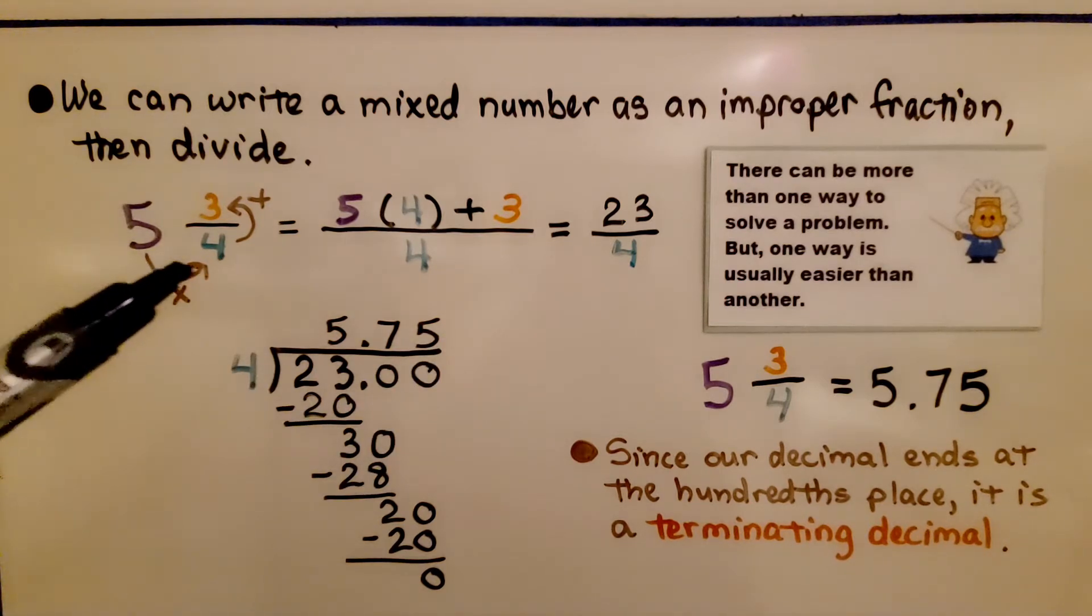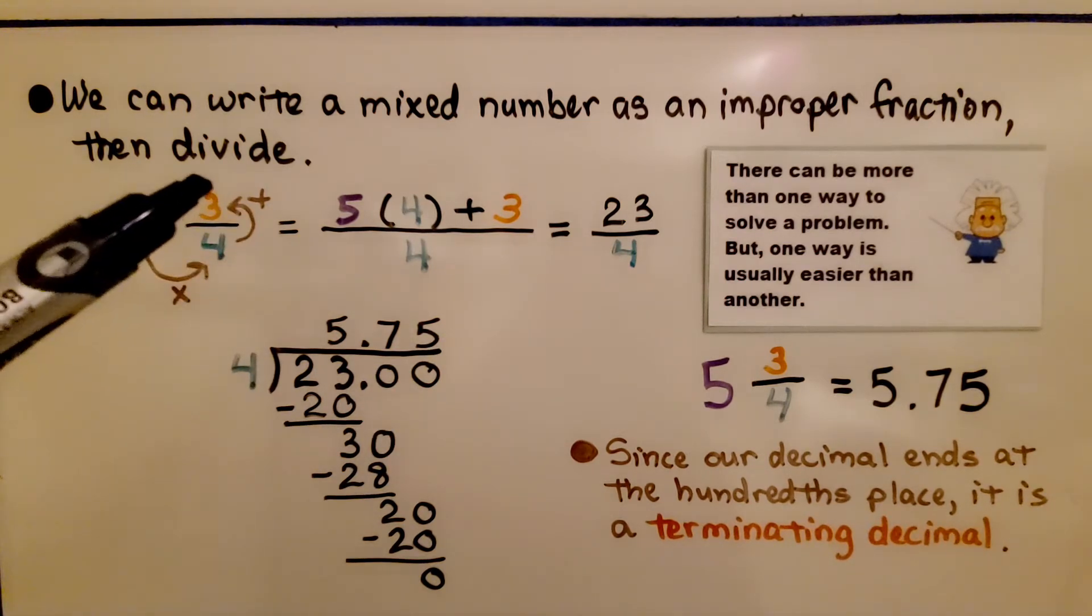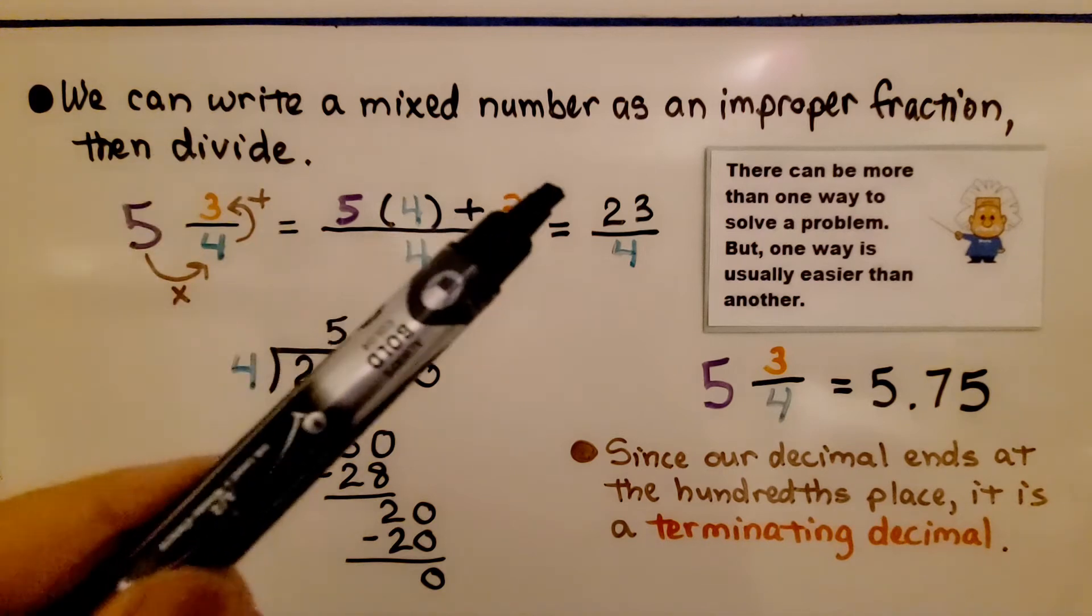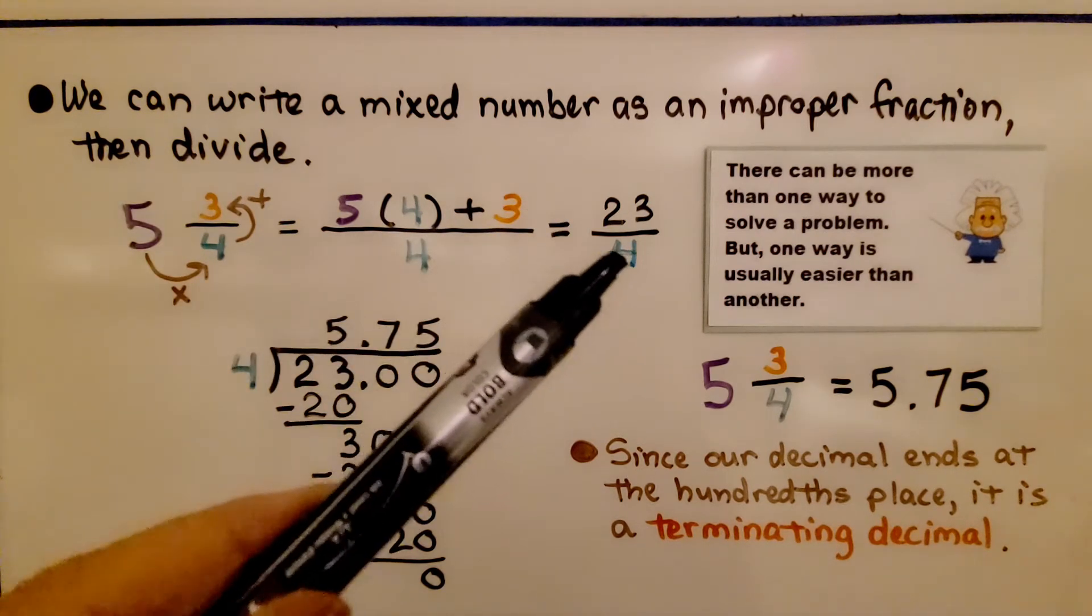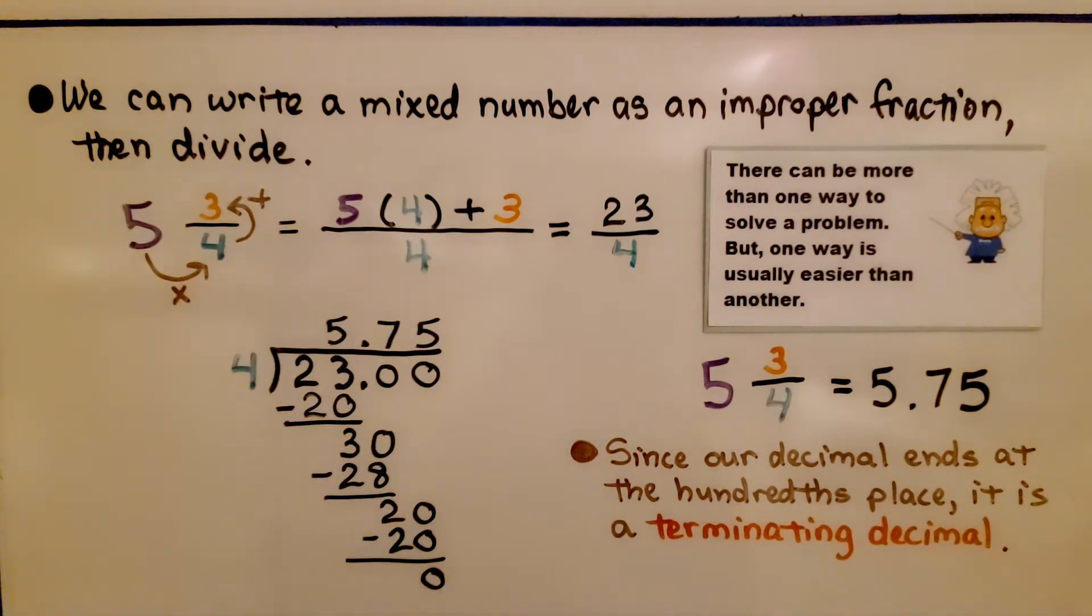We multiply the whole number by the denominator and add the numerator. That's our new numerator. We write it over the denominator. We have 23/4.